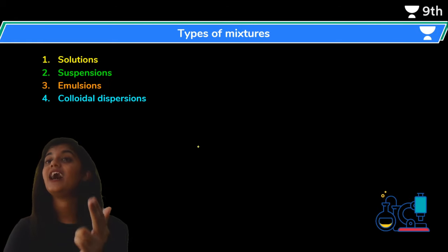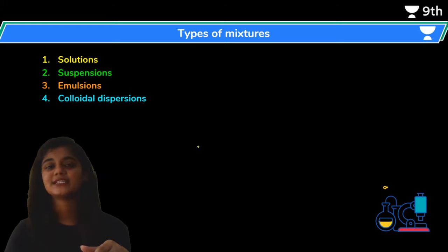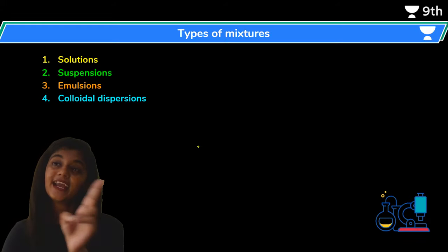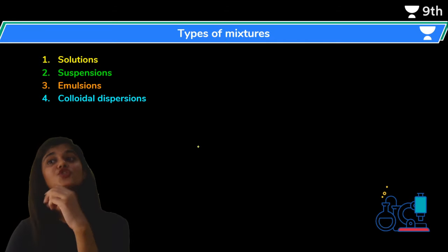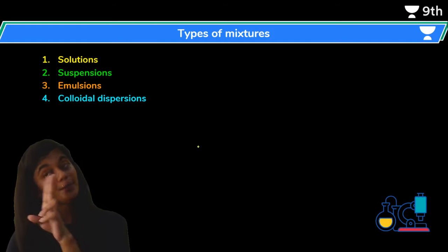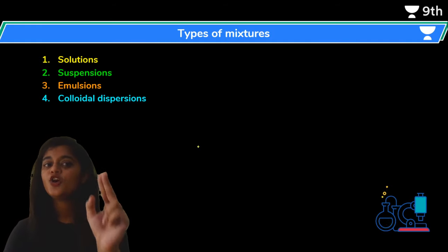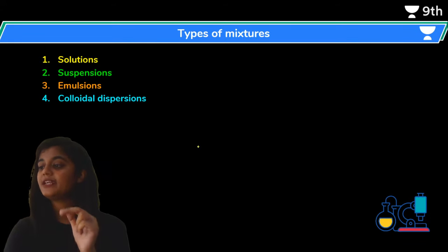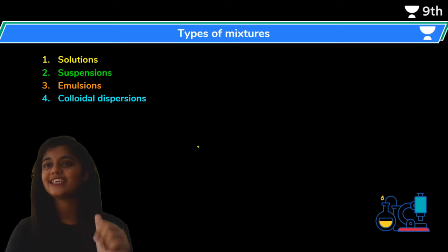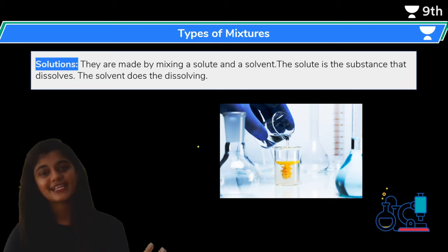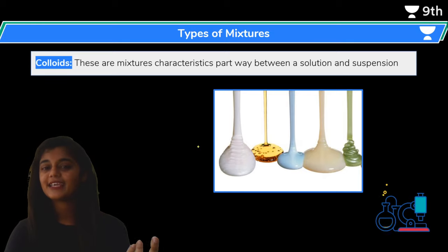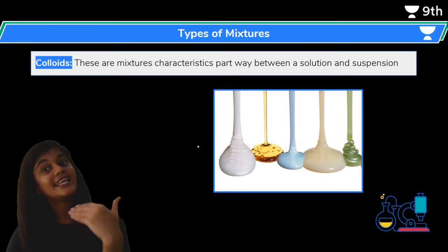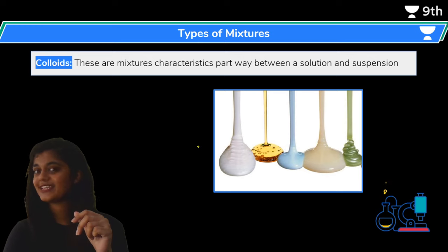We can do our discussions on different types of mixtures. We have covered the broad classification: homogeneous and heterogeneous mixtures. Now there is another classification for mixtures — we have divided them into four types: solution, suspension, emulsion, and colloids. We will discuss these four types in the next class, so it will be easier for you to understand in the next lecture.